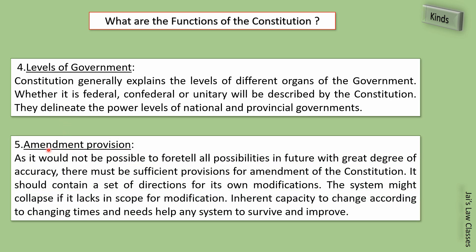Fifth function: Amendment provision. Since it is not possible to foresee all future possibilities with accuracy, there must be sufficient provisions for amendment of the constitution. It should contain directions for its own modification. The system might collapse if it lacks scope for modification. If there is no amendment provision, future uncertainties arise; as times change, people's demands change, so changes in the law are also necessary.